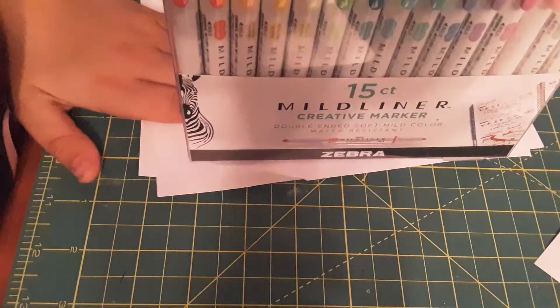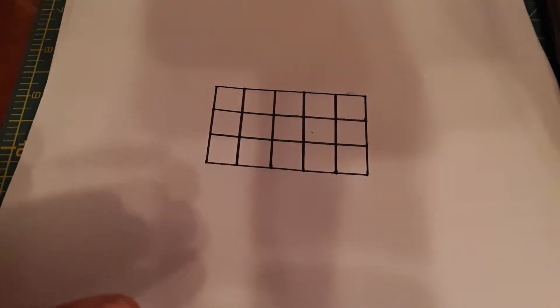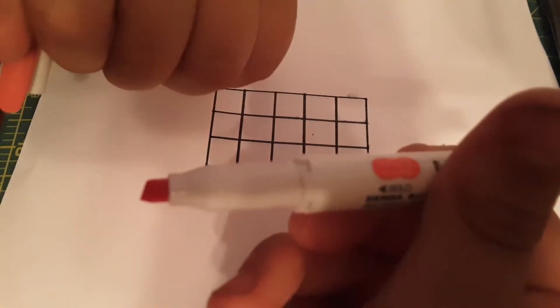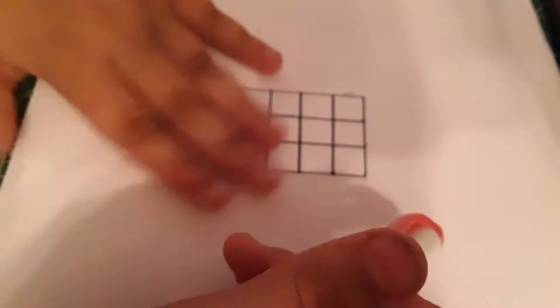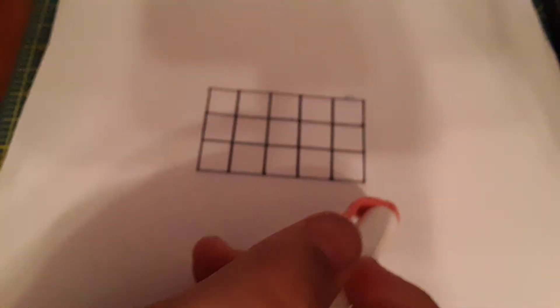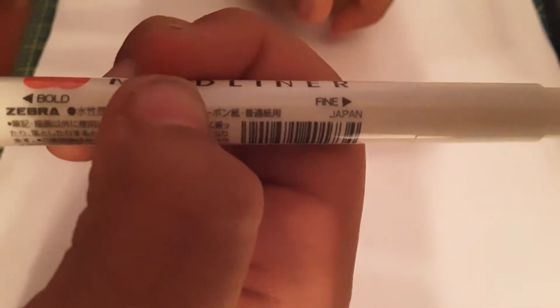Okay, so I'm set up now. The markers look like this - they're a good size. There's a bold chisel tip on one end and a fine tip on the other. I have my grid here with 15 slots for all 15 markers. They don't have English names, but they're made in Japan, which is cool. I'll just color in the boxes.